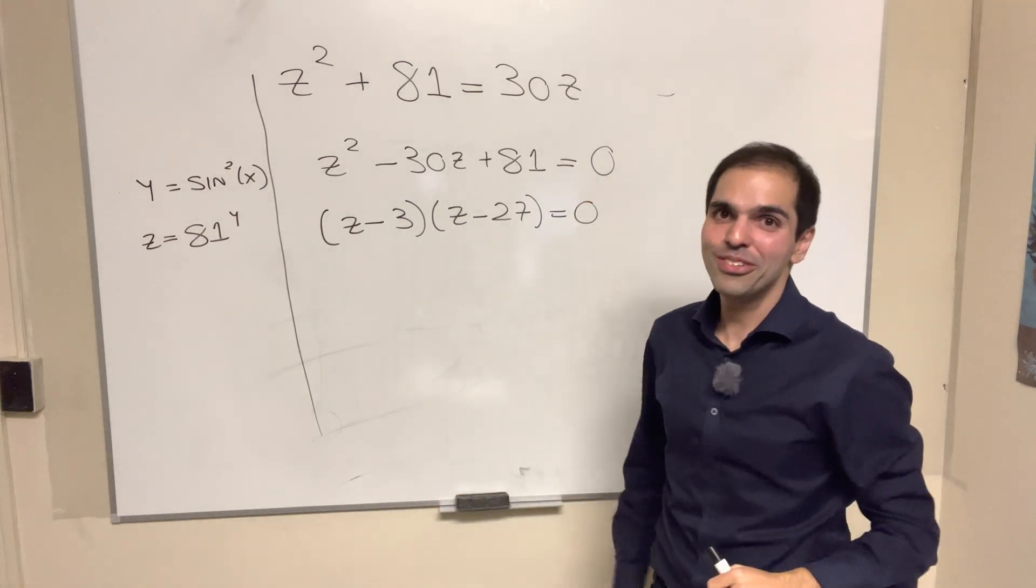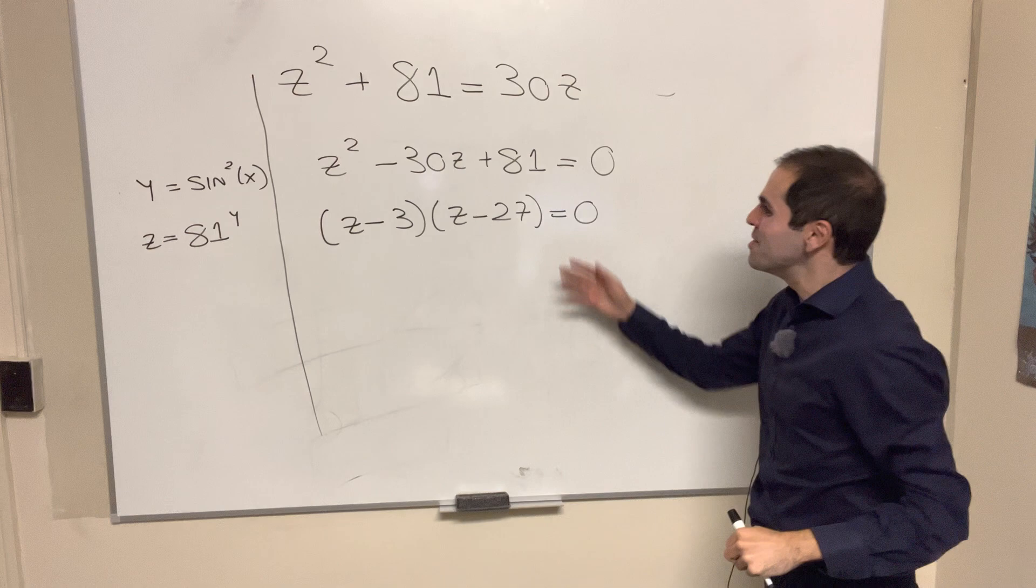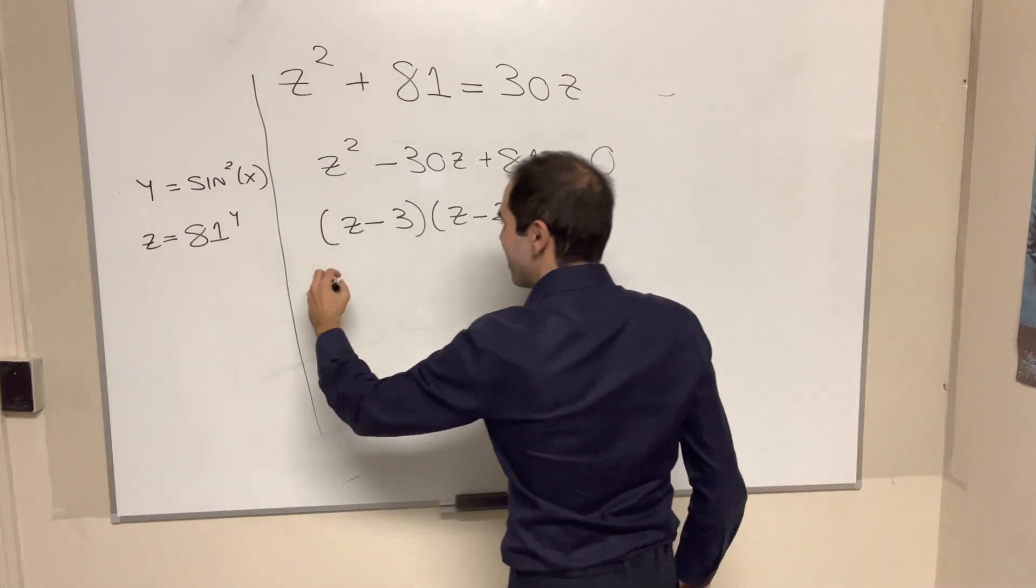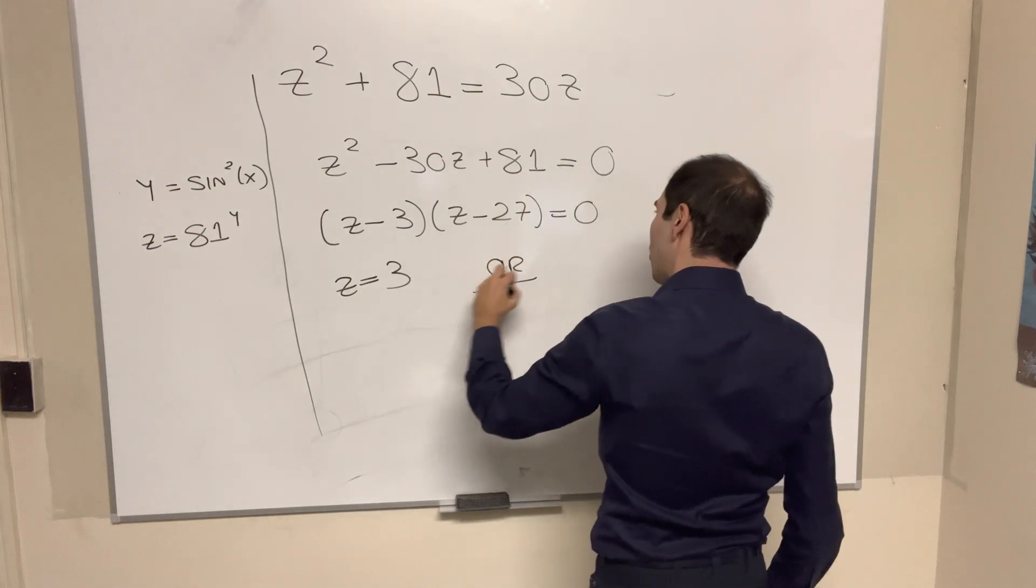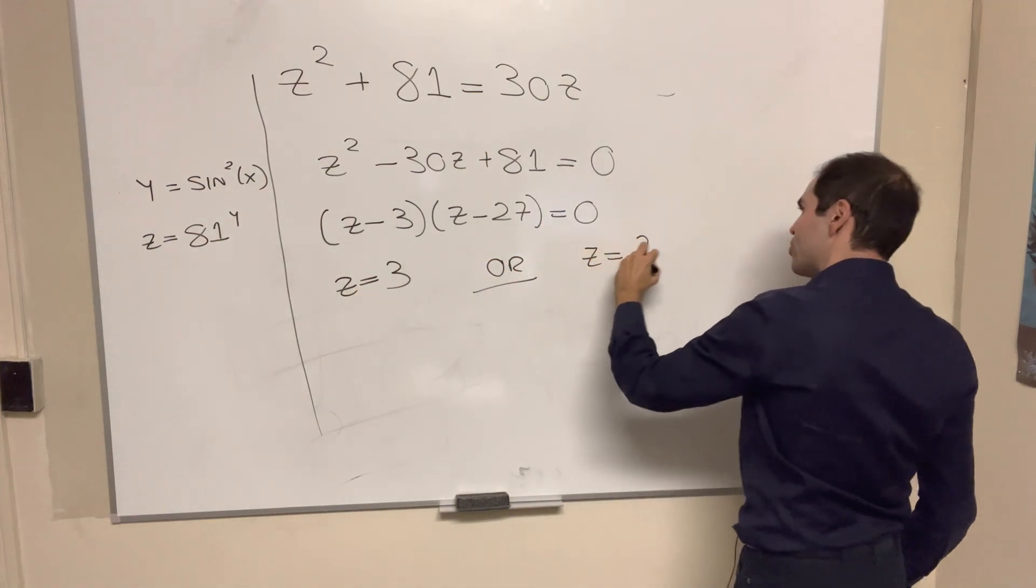Sorry, I did have to use Wolfram Alpha for this, but still, I solved it. So then we get either z equals 3 or z equals 27.